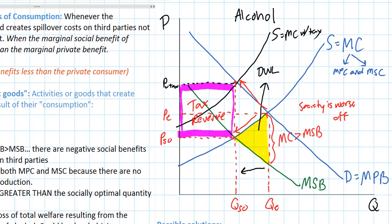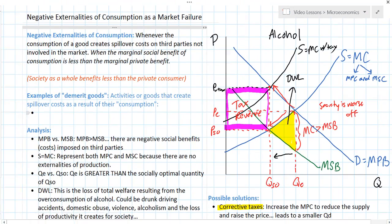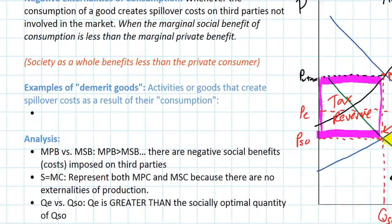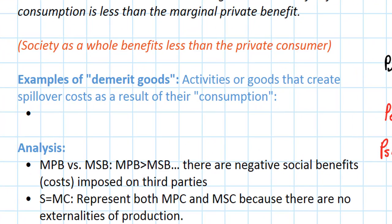So what are some other examples of goods that create negative externalities of consumption? First of all, I want to introduce a new term here. There is another name for goods that create negative externalities of consumption, and that is demerit goods. Demerit goods are activities or goods that create spillover costs as a result of their consumption. That's what we've shown here. In fact, drinking is really what harms a third party, not alcohol itself, so drinking too much is really the behavior or the activity that we would be analyzing in this graph.